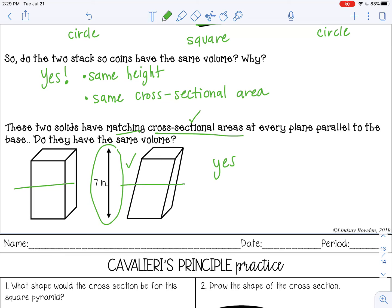Even though they don't look the same, it doesn't matter. As long as those two criterion are met, they will have the same volume. And that is what Cavalieri's Principle is all about.